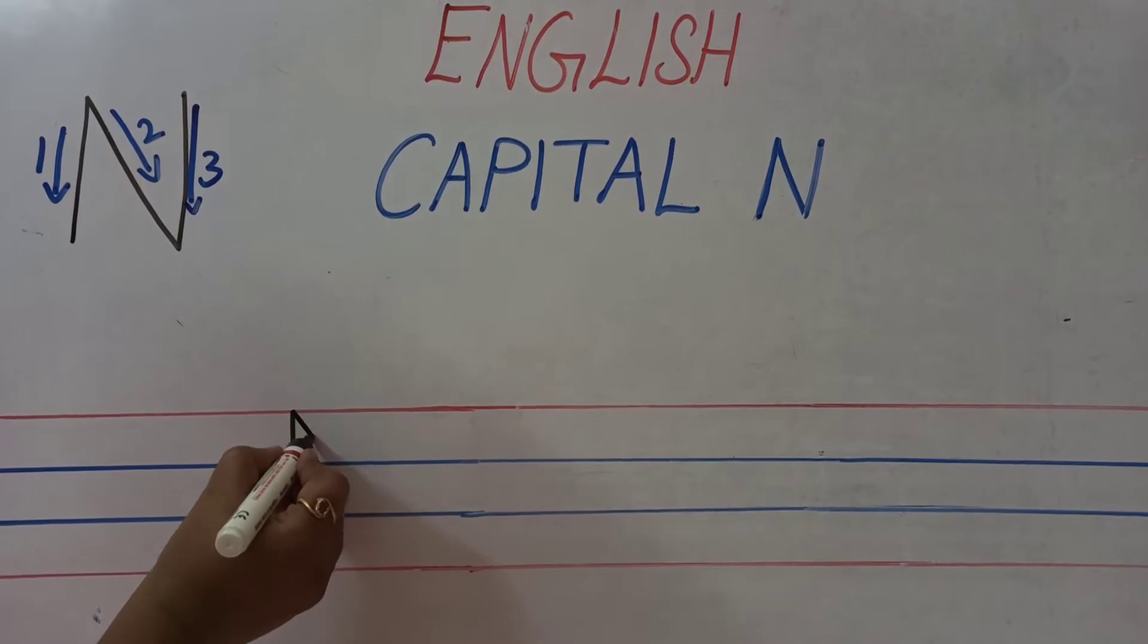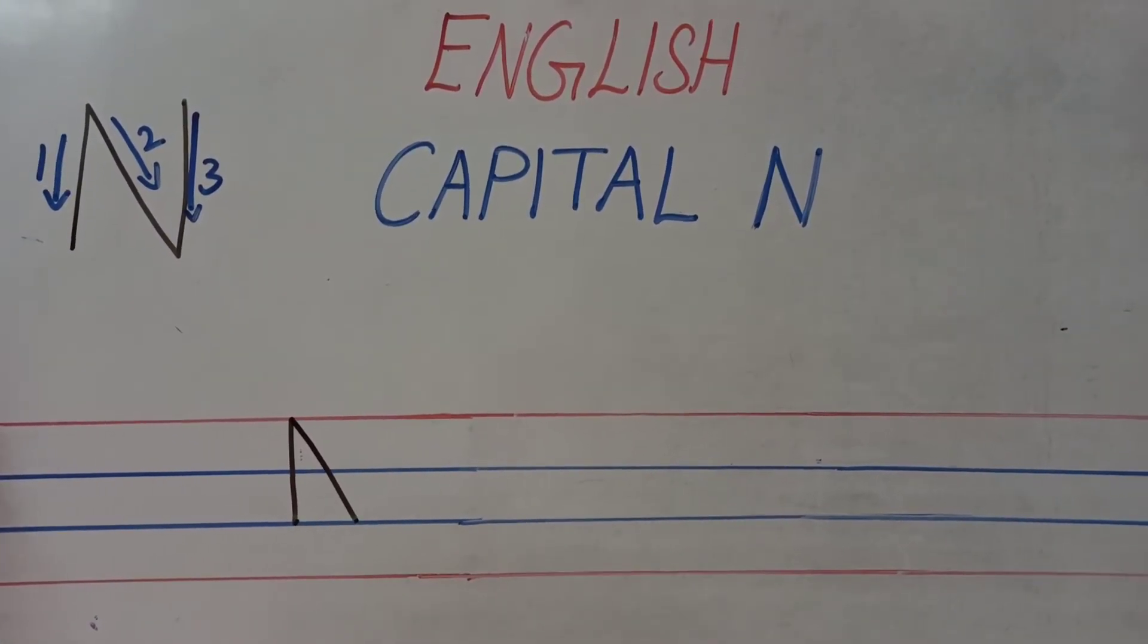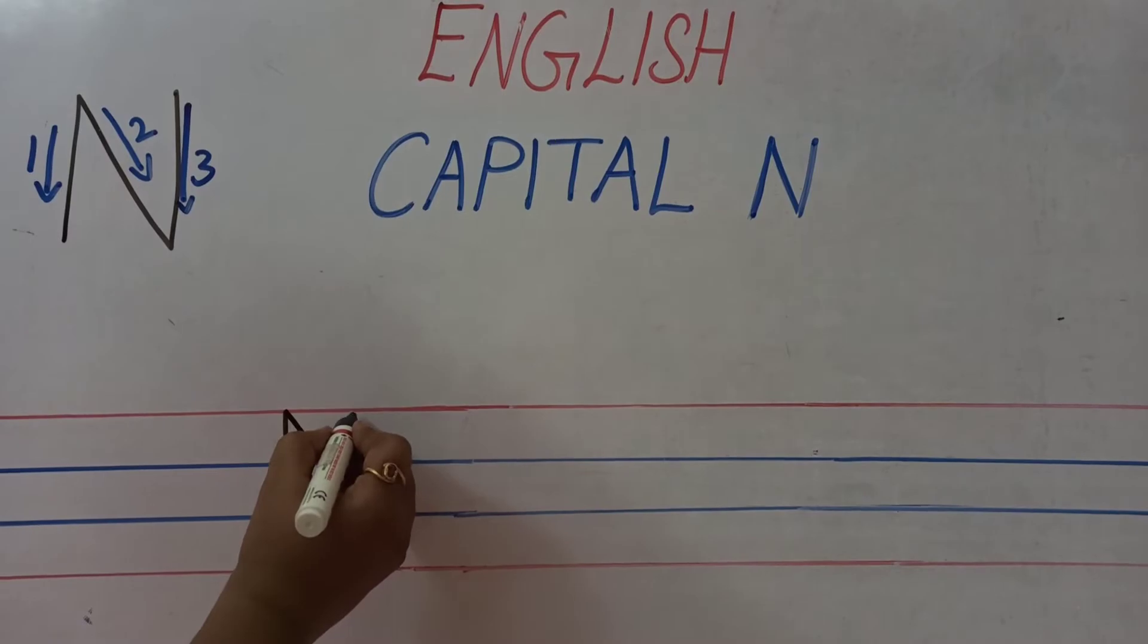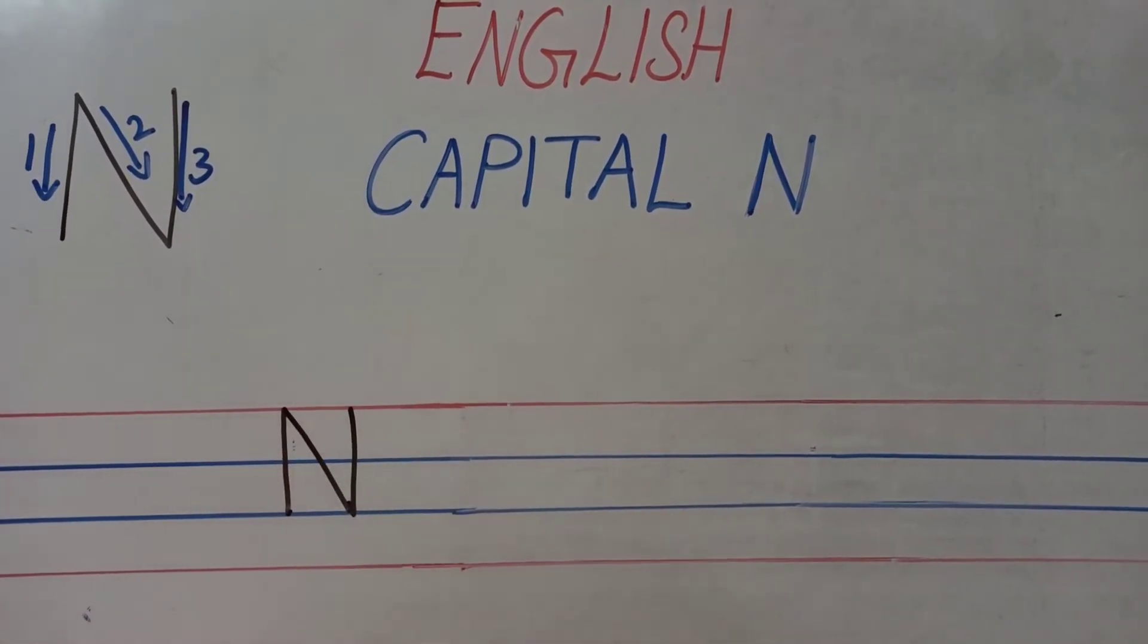Then comes slanting line. What is this line called? Slanting line. Then again we are going to write standing line. What is this letter called? Capital N.